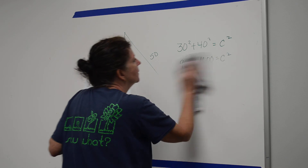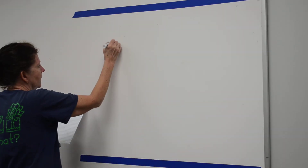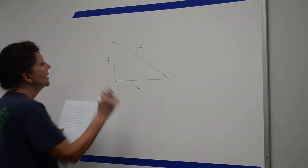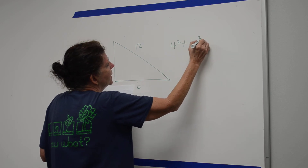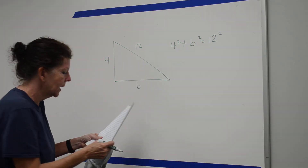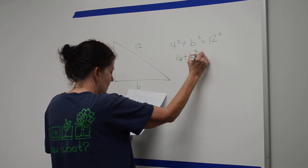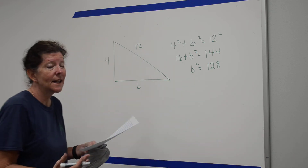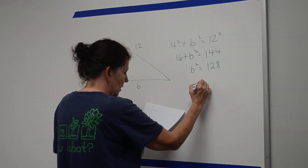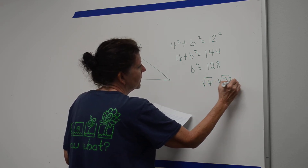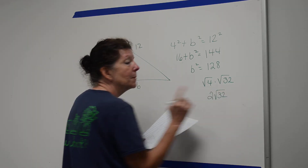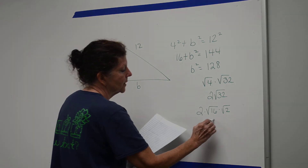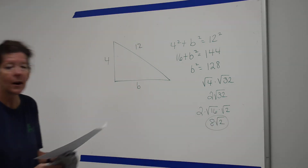Sometimes you're given a leg and the hypotenuse and need the other leg. Set it up the same way: 16 plus B squared equals 144. Subtract 16 to get B squared equals 128. Taking the square root: 128 is the square root of 4 times the square root of 32, which is 2 on the square root of 32. Then 32 is 16 times 2, so 2 times the square root of 16 times the square root of 2 is 2 times 4 on the square root of 2, giving 8 on the square root of 2. You must break it all the way down.